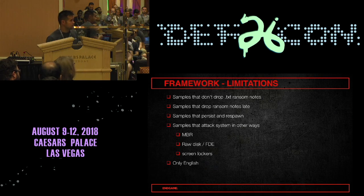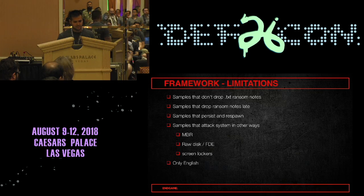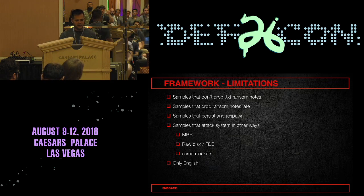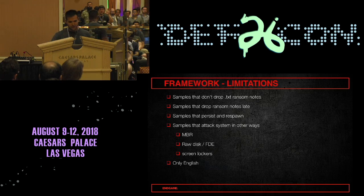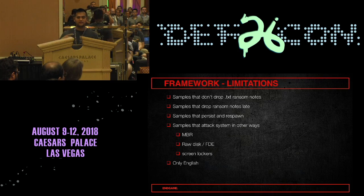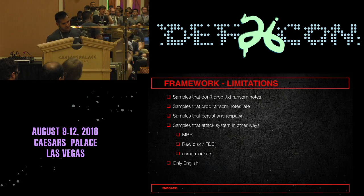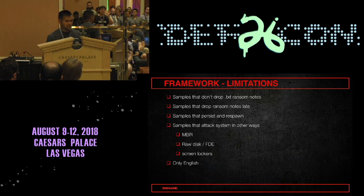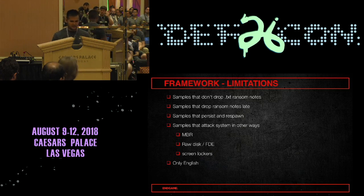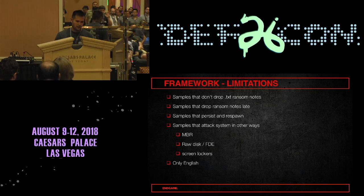There are definite limitations with this approach. Many ransomware samples don't drop .txt ransom notes — some don't drop notes at all, some convey ransom messages through custom file extensions applied to every encrypted file. Some samples drop ransom notes much later after all files have been encrypted. Some samples leverage persistence and keep going even if you suspend or terminate the process. And of course there's ransomware that takes entirely different approaches to denying data access — MBR modifications, raw disk access, or simple screen lockers. We're also limited to English only.